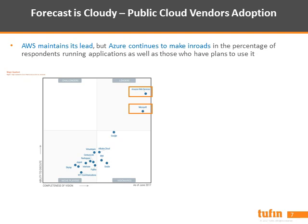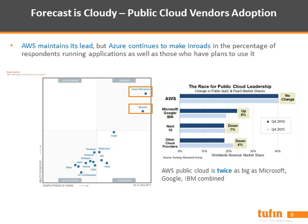Looking at the industry based on Gartner Magic Quadrant for public cloud vendors, AWS definitely maintains the lead, while Microsoft Azure continues to make inroads. AWS public cloud market share as of end-of-2016 surveys is almost twice as big as Microsoft, Google, and IBM cloud market share all together. That's also why Tufin invests and continues in this direction as a strategic one, not only for 2017 but moving onwards.